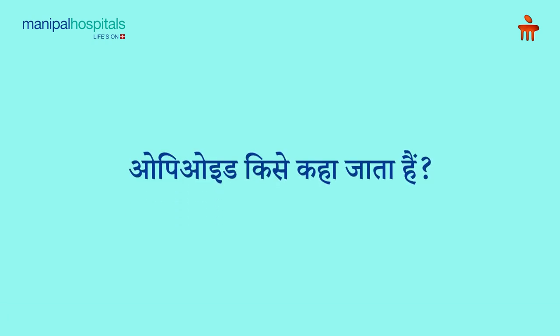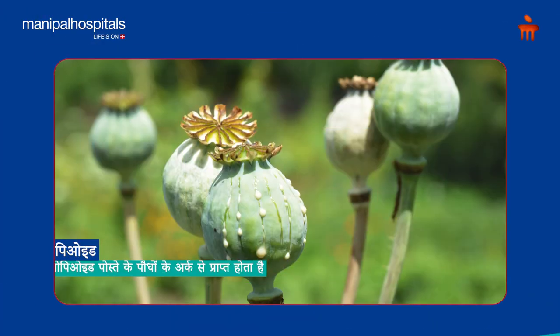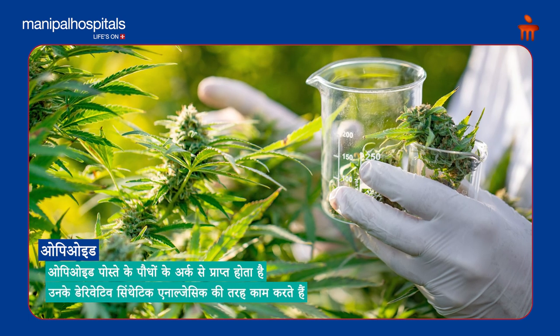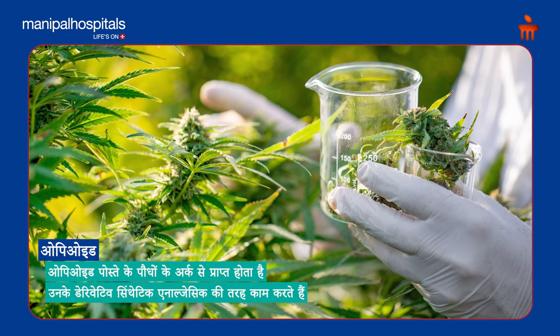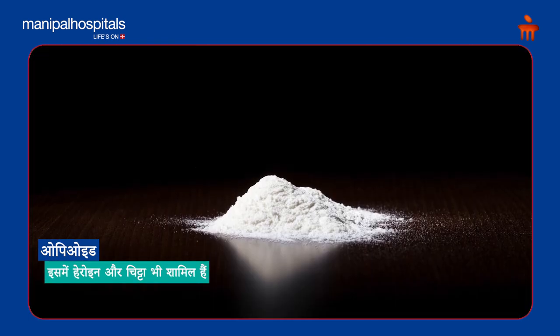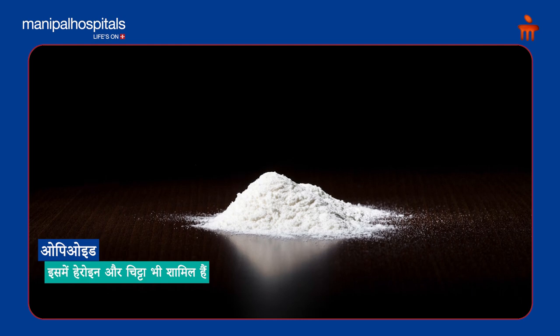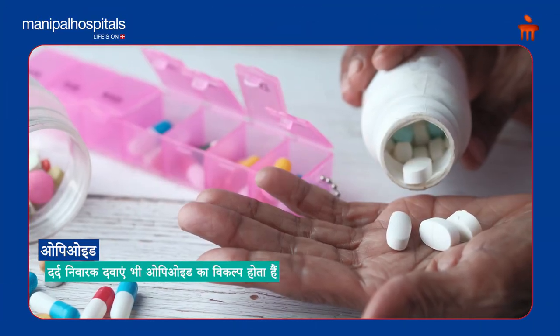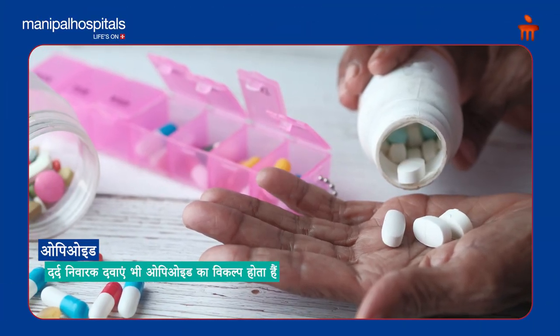What is opioid use? Opioid is derived from the poppy plant, Papaver somniferum. They work as semi-synthetic or synthetic analgesics. They include heroin, chitta, ibakis, etc. We also have painkillers available in the market, which also substitute as opioids in different forms.